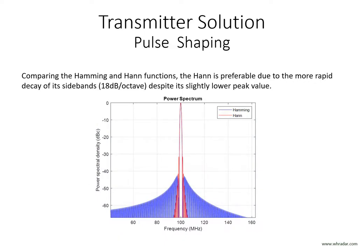This graph compares the spectra of the Hamming shaped pulses in blue with the Hann shaped pulses in red. All things considered, the Hann function is often perceived as being optimum due to its more rapid decay of sidebands with increasing frequency offset, in spite of its marginally greater loss in transmitted energy.